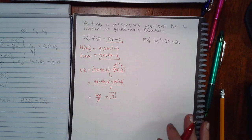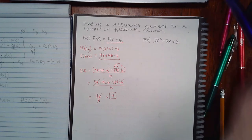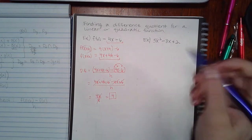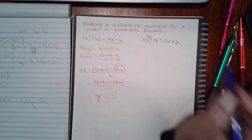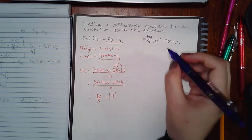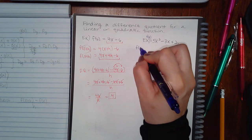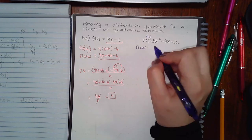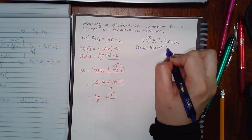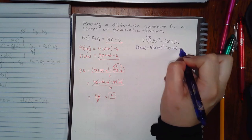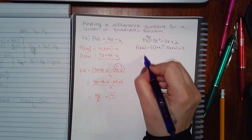Now we're going to do the same thing, but for this other function. And I believe it's missing a label. It should say f of x equals this. So I still need to figure out what f of x plus h looks like. So wherever I see an x, I'm going to plug in x plus h. And then I'm going to simplify.